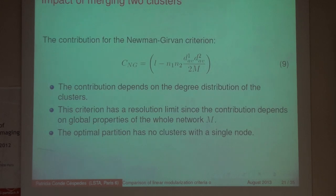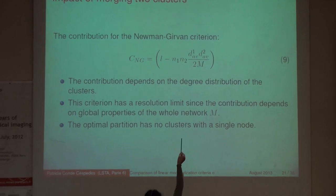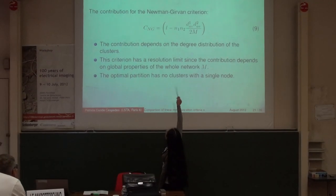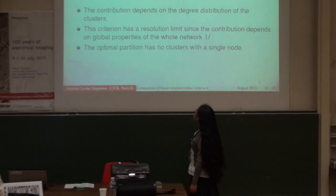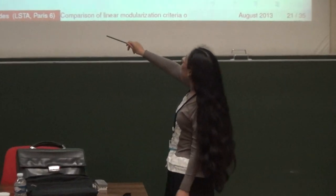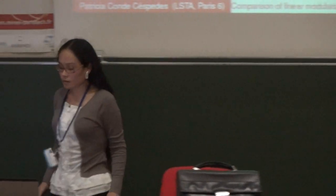Next, the Newman-Girvan criterion. The contribution depends on the degree distribution, which follows a power law. The criterion has a well-known resolution limit because we have M — a global property — so the contribution depends on the size of the entire graph. We also find that the optimal partition has no clusters with a single node.